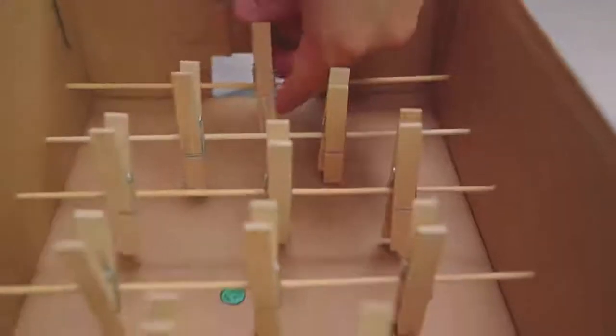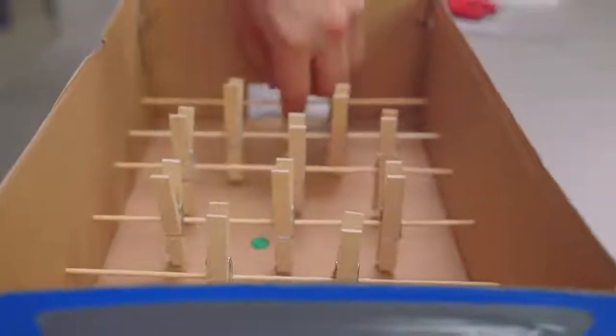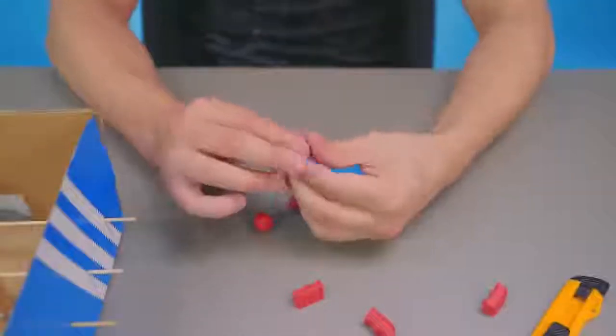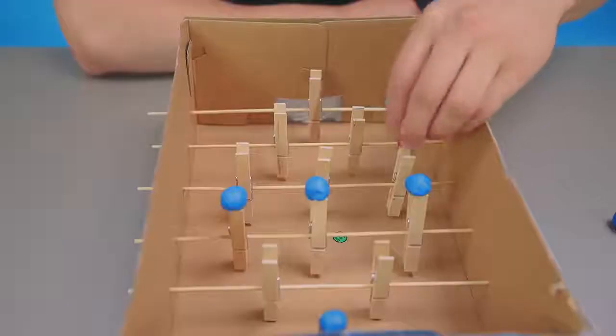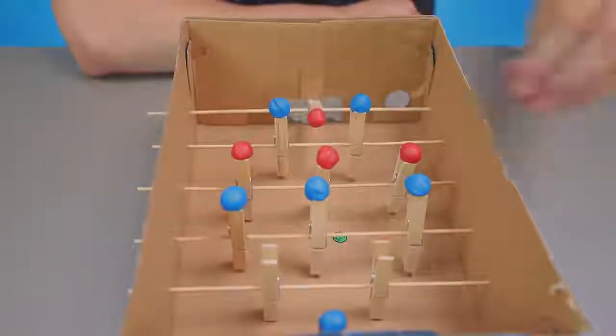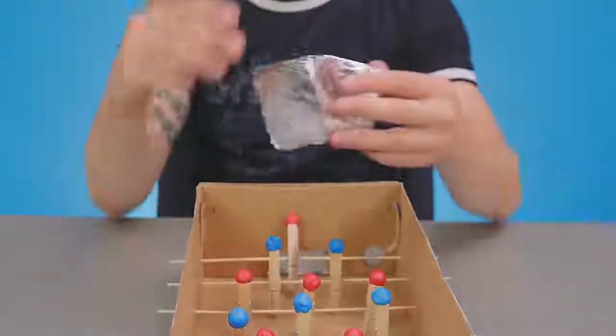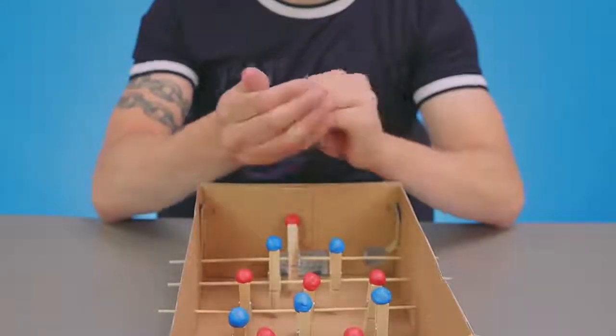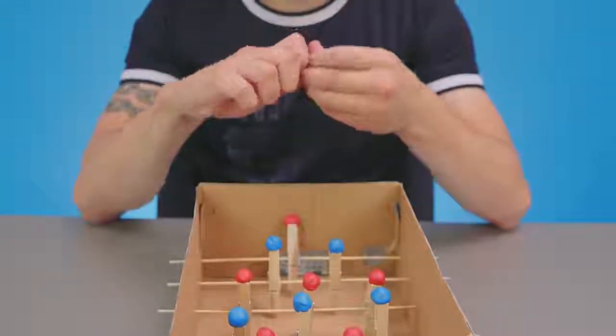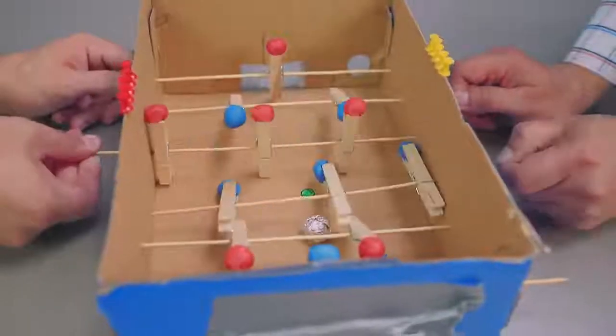Now you have to dress the players to make two different teams and we'll use plasticine for this. Make 12 balls of two different colors and put them on the heads of the players. And we almost forgot about the ball. Just crumple the aluminum foil into a ball, throw it into a box and start playing.